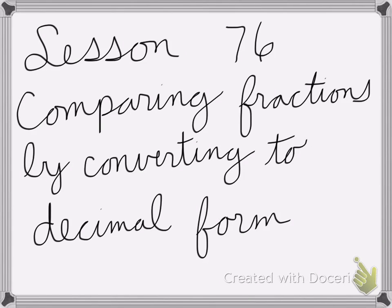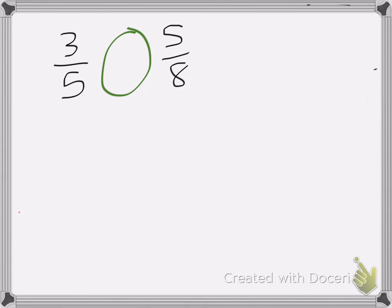All right, so lesson 76 is on comparing fractions by converting them to a decimal form. So here I have 3 fifths and 5 eighths, and I want to know which one is greater. So I'm going to change these both into decimals.